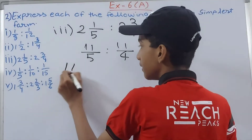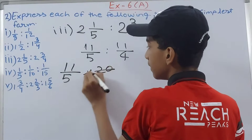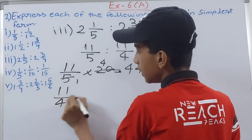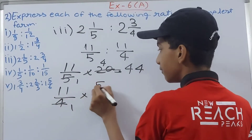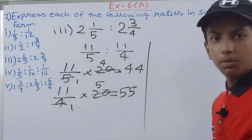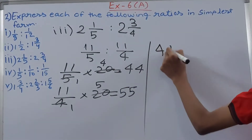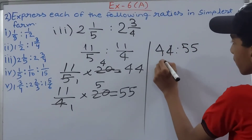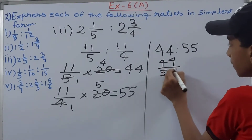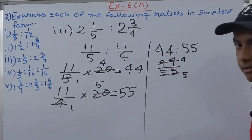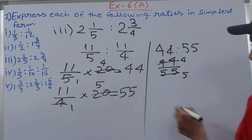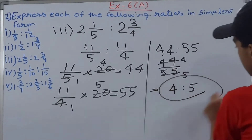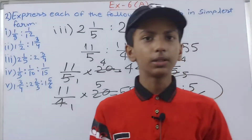The LCM of 5 and 4 is 20. So 11/5 × 20 = 44, and 11/4 × 20 = 55. The ratio is 44 : 55. Dividing both by 11 gives us 4 : 5. This cannot be simplified further, so our answer is 4 : 5.